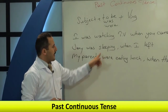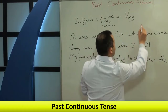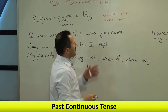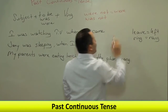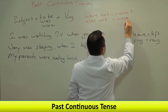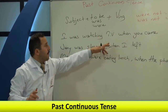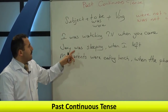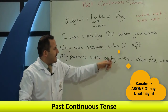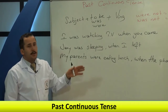Soru yaparken yardımcı fiili başa alıyoruz. Olumsuz yaparken yanına not getiriyoruz. Kısa yazılışları: were not → weren't, was not → wasn't. Olumsuz örnekler: 'I wasn't watching TV when you came.' 'Jenny wasn't sleeping when I left.' 'My parents weren't eating lunch when the phone rang.' Aynı cümlelere sadece olumsuzluk eki getirerek olumsuz yapabiliyoruz.